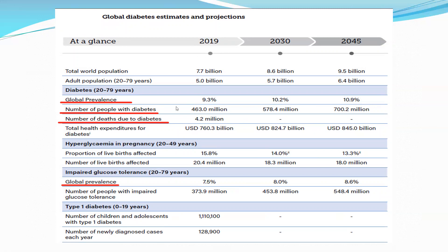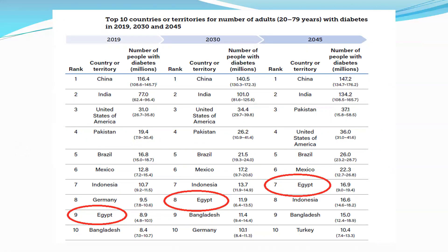The global prevalence of diabetes in 2019 was about 9 percent, expected to reach almost 11 percent by 2045. Impaired glucose tolerance has a prevalence of 7.5 percent, expected to reach almost 9 percent by 2045. Egypt is among the top 10 countries with the highest diabetes prevalence — ranking 9th in 2019, expected to reach 8th by 2030 and 7th by 2045.